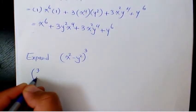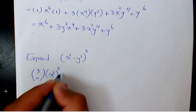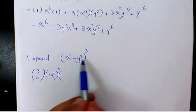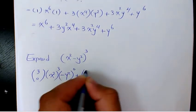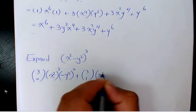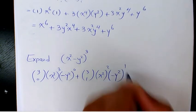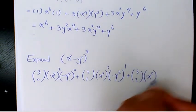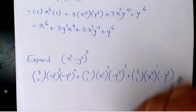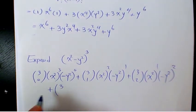For (x² - y²)³, when you expand it's going to be 3 choose 0 · (x²)³, and the second term is going to use negative y² instead of y². So it's very similar to the previous one, but instead of y² you put negative y².